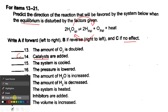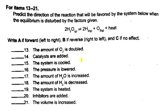Number 15: the system is cooled, meaning the temperature is decreased. This is an exothermic reaction because heat is given off by the reaction, so we consider heat as one of our products. When we decrease the temperature, the equilibrium will shift to the right to make more heat. So this favors the forward reaction.